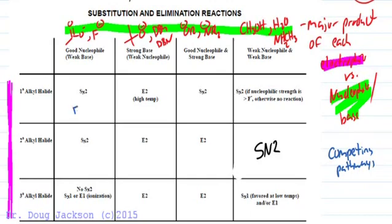So if you're asked to draw all products you want to draw the major and minor. So with SN2, always in competition is E2, and so we'll put those in. For SN2, E2 is in competition. And for elimination, substitution is in competition for primary and secondary halides.